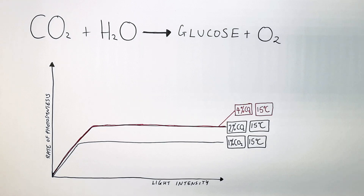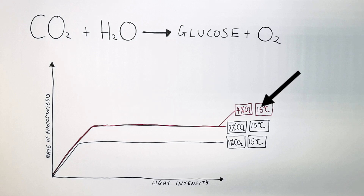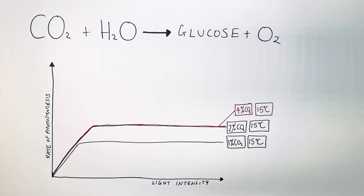Now we increase the CO2 concentration to 4% but keep the temperature the same at 15 degrees Celsius. As you can see, the rate of photosynthesis has not changed. That means it is the temperature that is currently the limiting factor.